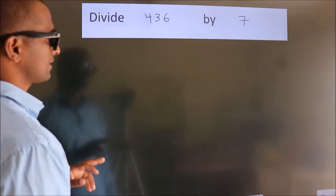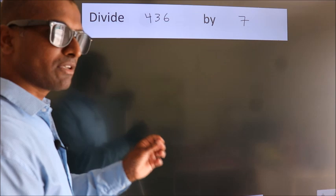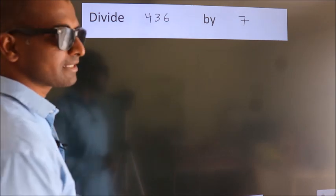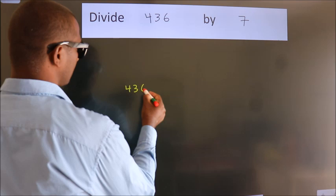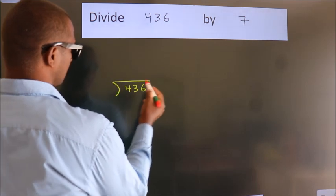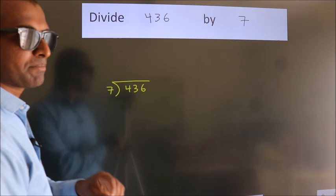Divide 436 by 7. To do this division, we should frame it in this way. 436 here, 7 here. This is your step 1.